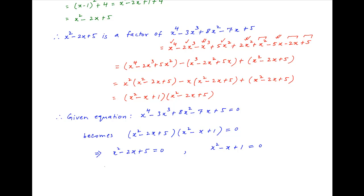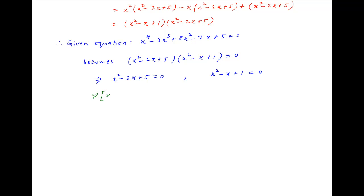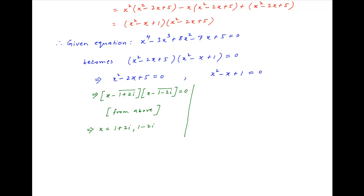In the first case, using the result above, we have x minus (1 plus 2i) multiplied by x minus (1 minus 2i) equals 0. Therefore, the roots in this case are x equals 1 plus 2i and x equals 1 minus 2i.